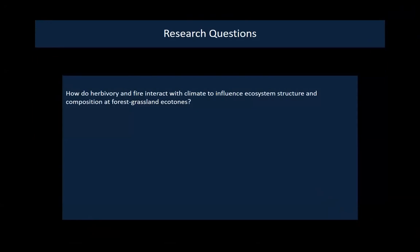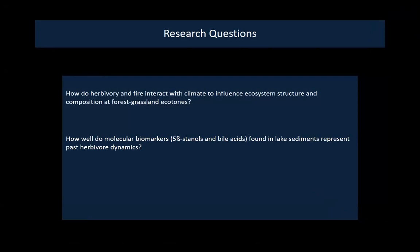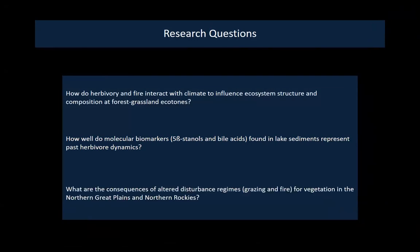I have three questions. The first deals with long-term changes — looking into the past to understand the present: how do herbivory and fire interact, with climate, to influence ecosystem structure and composition at forest-grassland ecotones? Second, I'm going to look into biomarkers and try to establish a relationship between biomarkers found in lake sediments and how many herbivores are actually on the land at a given point in time. Third, what are the consequences of these altered disturbance regimes for vegetation in the northern Great Plains and northern Rockies — using a big-picture modeling approach?